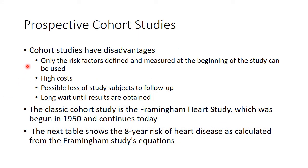Cohort studies have disadvantages: only risk factors defined or measured at the beginning of the study can be used — you can't add another risk factor five years in without distorting the cohorts. Prospective studies also have higher costs, longer timelines, and loss of subjects to follow-up, since people lose interest or drop out over time. One of the classic cohort studies is the Framingham Heart Study, begun in 1950 and continuing even today.